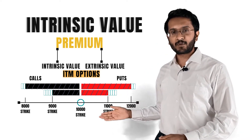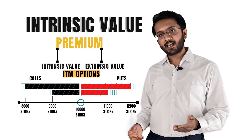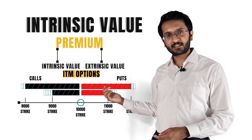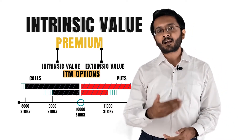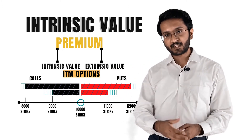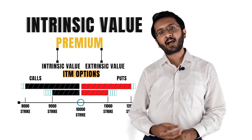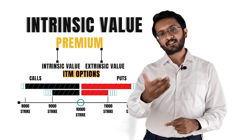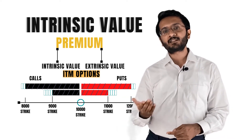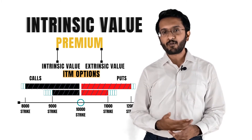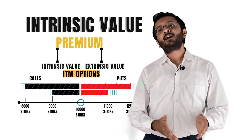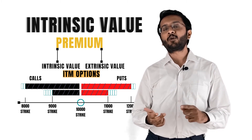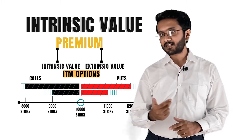For something priced at 10,000 rupees right now, if you ask for the right to purchase it at 9,000 rupees after 1 month — the current price is 10,000 and you want to purchase at 9,000 — I will charge you the intrinsic value, which is the difference between the current price and the strike price: 10,000 minus 9,000, which is 1,000 rupees. On top of that, since it is in the money and has time remaining, it will have time value as well as implied volatility value — that is the extrinsic value.